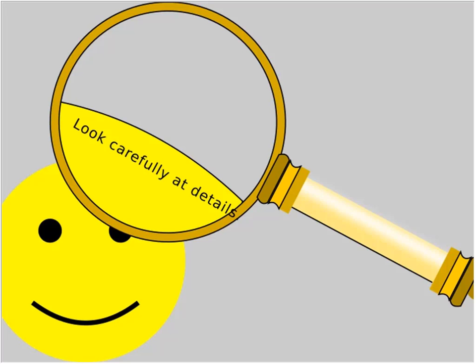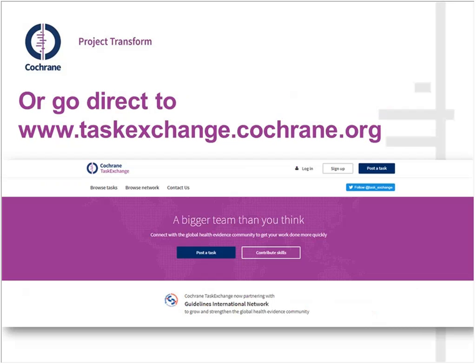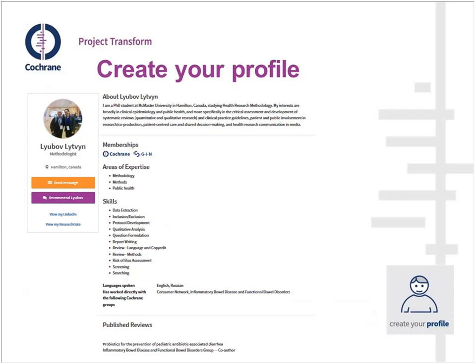How do you get to the platform? You can get to it through your GIN dashboard — there's a 'Visit Task Exchange' button on everyone's dashboard. You can also go directly to the Task Exchange website. The first time you sign up, you'll create a Cochrane account, which just takes a couple of minutes, and then you'll be ready to log in to Task Exchange itself.